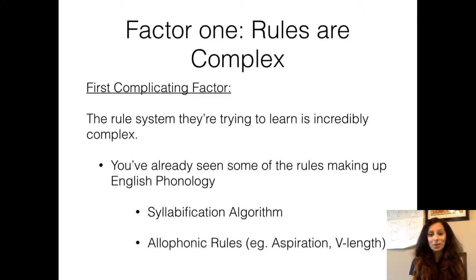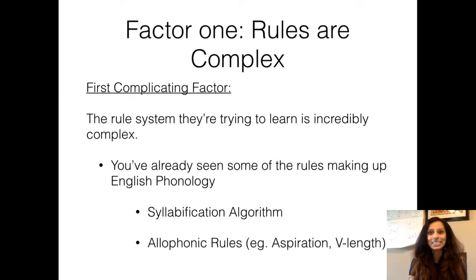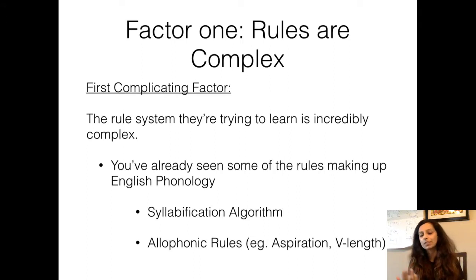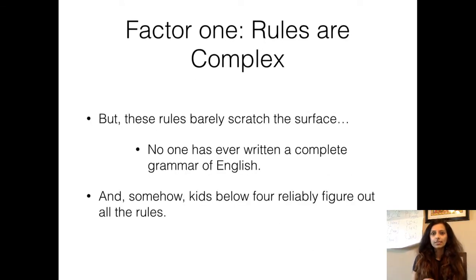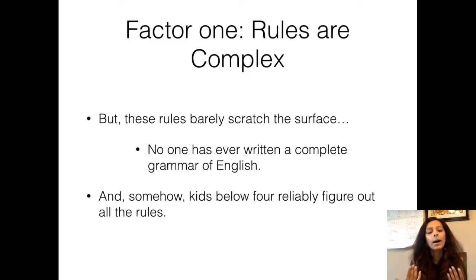The first complicating factor is that certain rules are actually really complicated. Linguistics is not an easy subject. We've noticed that things like phonological rules and phonetic transcription come with a certain level of complexity. We have already seen things like the syllabification algorithm, aspiration, vowel length, etc., that really complicate factors when it comes to language learning. These are just very basic linguistic rules, but obviously there are many more rules that we haven't covered in this introductory class. And somehow kids below the age of four figure out these rules pretty easily.